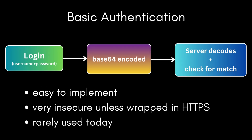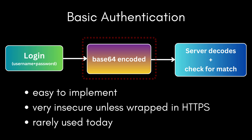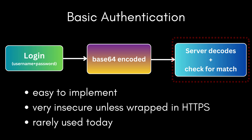The simplest form is basic authentication. The client sends a username and password with every request. These credentials are base64 encoded and included in the HTTP header, and the server decodes them and checks if they match. This is easy to implement, but also very insecure if not wrapped in HTTPS. Base64 isn't encryption — anyone who intercepts it can decode it instantly. Because of that, basic auth is rarely used today, except in internal tools, quick tests, or systems behind firewalls.